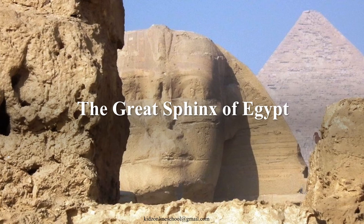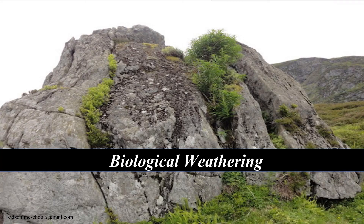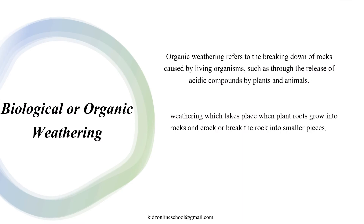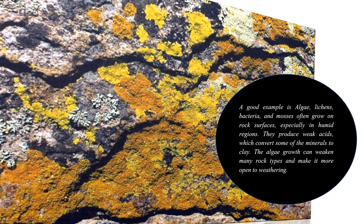In this picture, you can see the Great Sphinx of Egypt. Now we are going to learn about biological weathering. Biological or organic weathering refers to the breaking down of rocks caused by living organisms, such as through the release of acidic compounds by plants and animals. Weathering also takes place when plants' roots grow into rocks and crack or break the rock into smaller pieces. A good example of biological weathering is algae, lichens, bacteria, and mosses that often grow on rock surfaces, especially in humid regions.